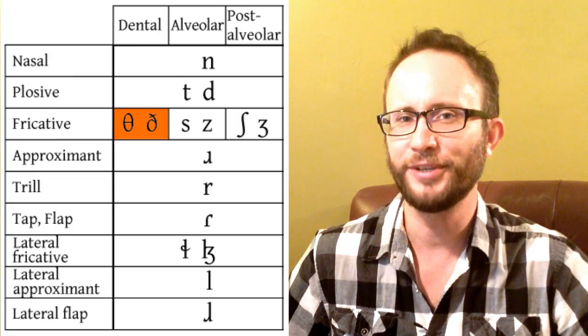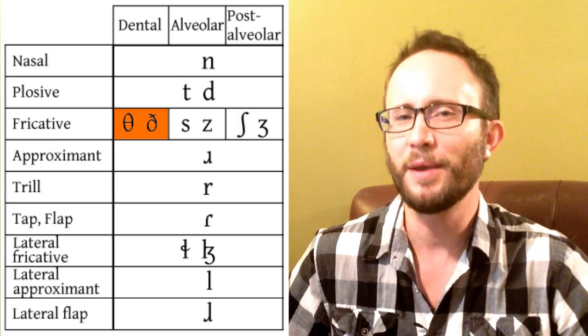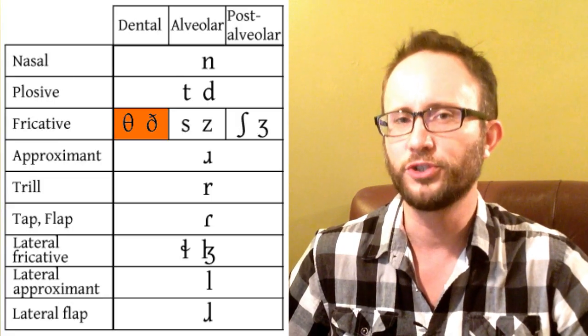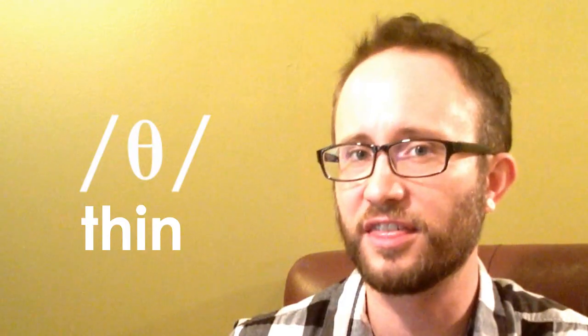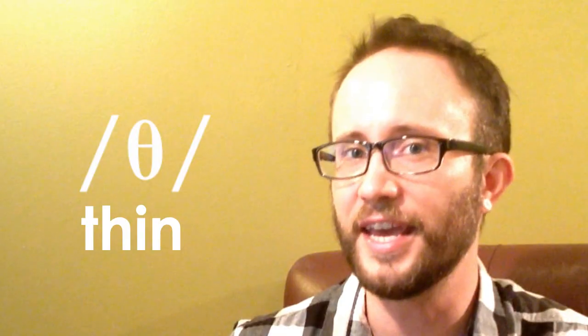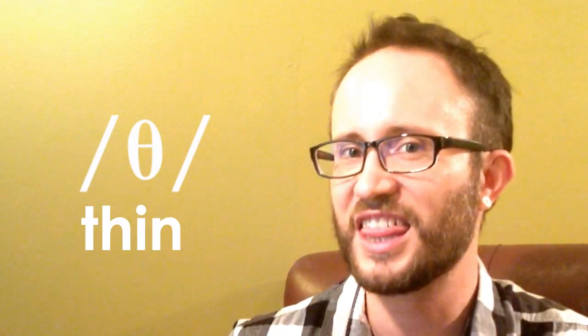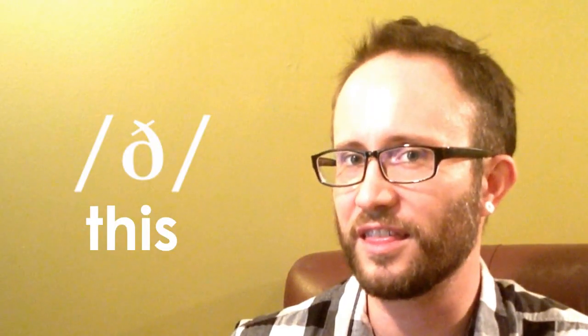Next we have the interdental sounds. Interdental sounds are made with the tongue either at or just poking between the two sets of teeth. In English we have 'TH' as in thin, and 'TH' as in this — those are the two interdental sounds in English.